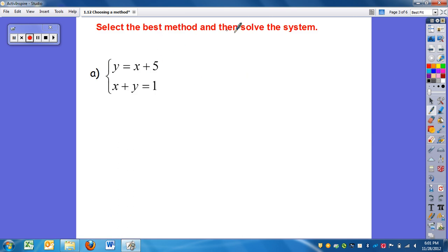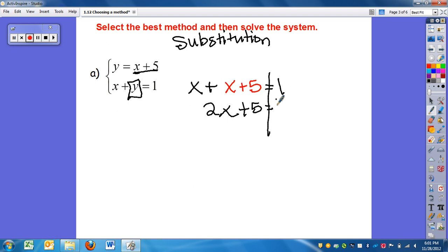All right, so when is the best method to solve using this one? We'll notice I have a variable isolated, y equals x plus five. So I'm going to use my substitution method. So reviewing that method, y equals x plus five. So I'm going to replace the y in the second equation. So now I have x plus, instead of y, we have x plus five equals one. Well, x plus x is two x. Solving, plus five equals one.